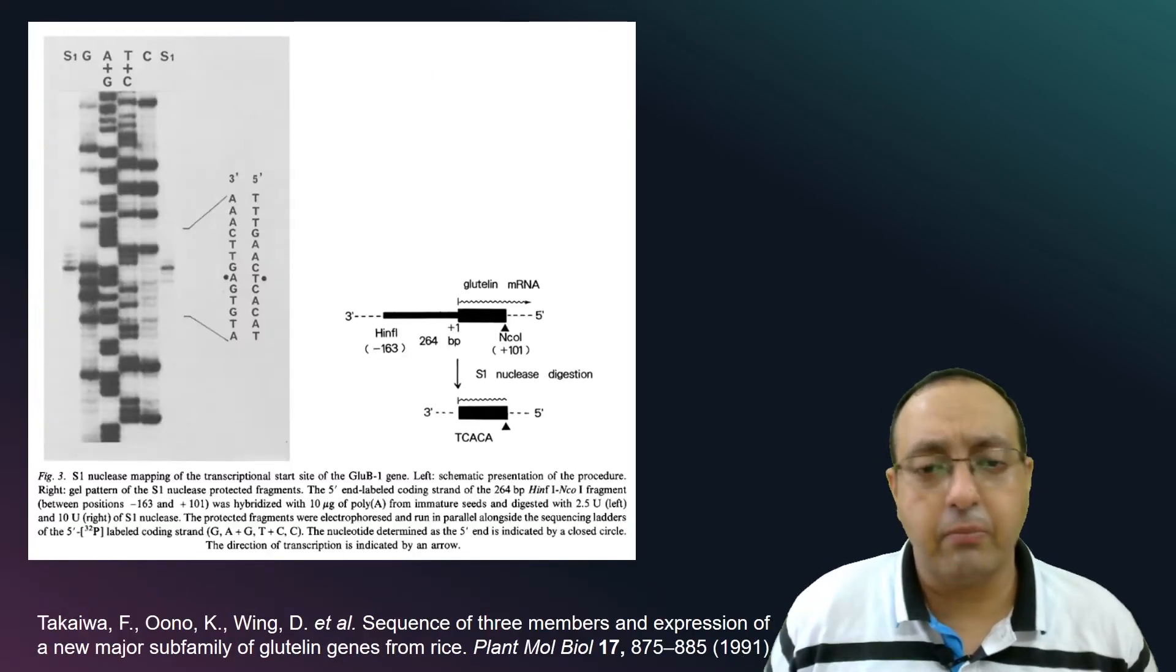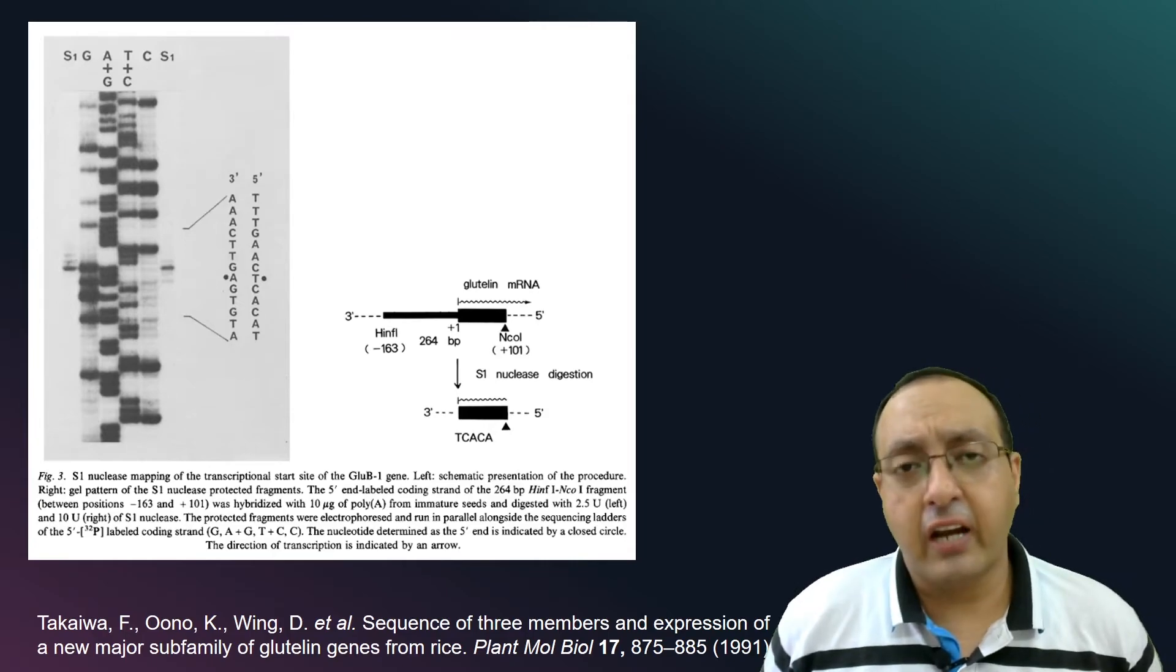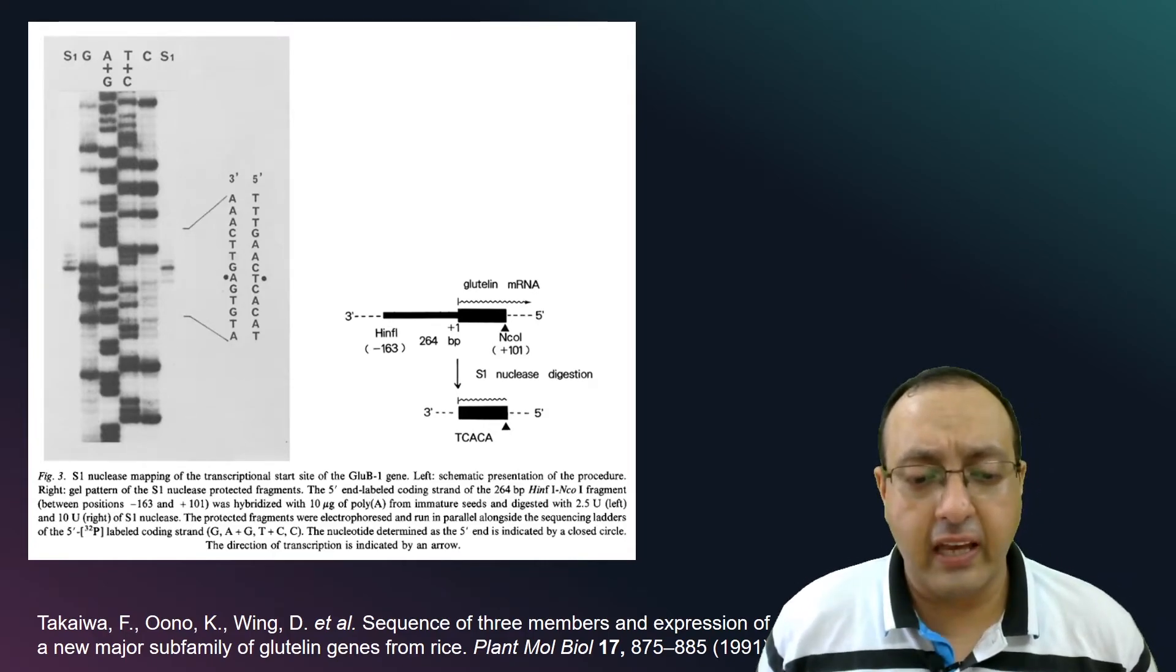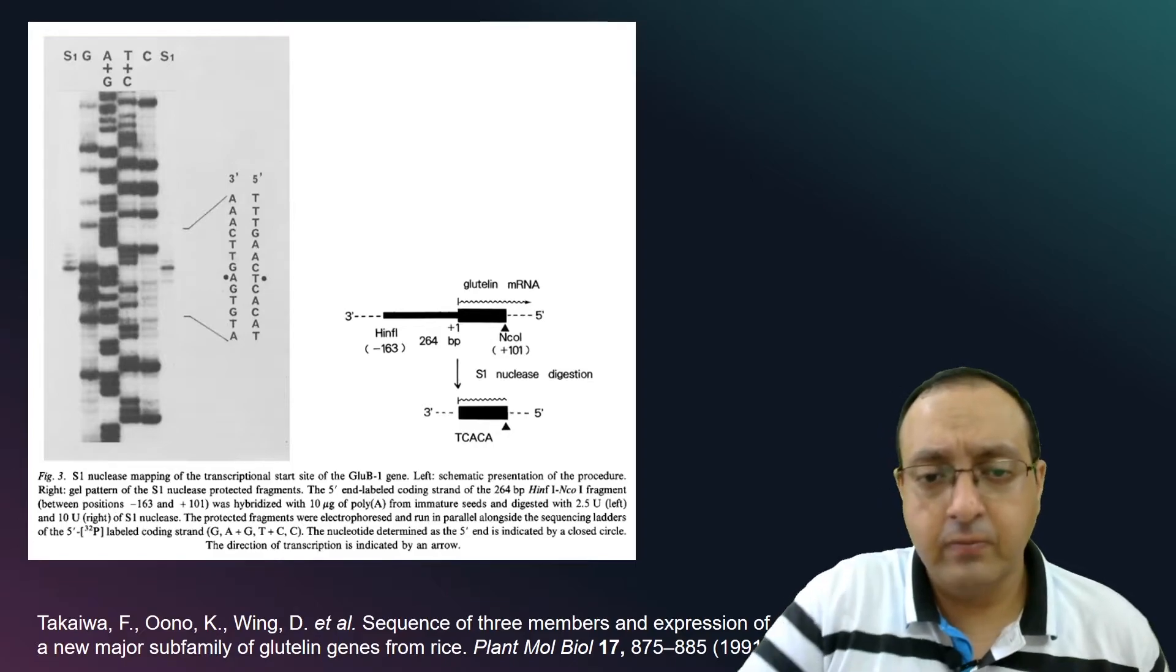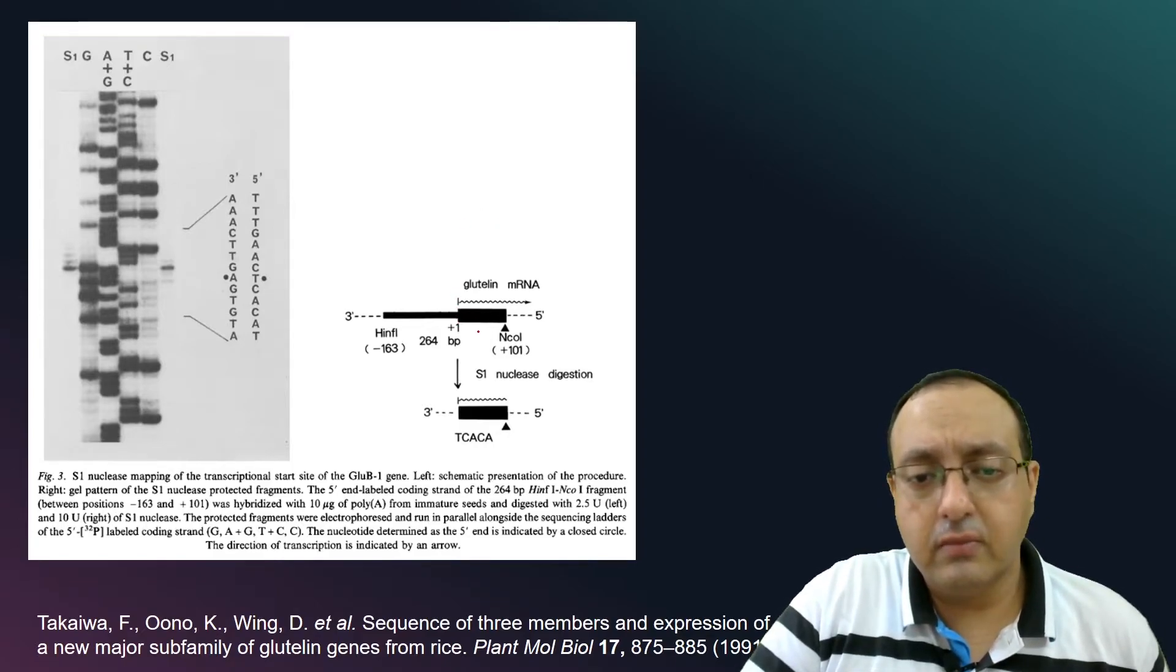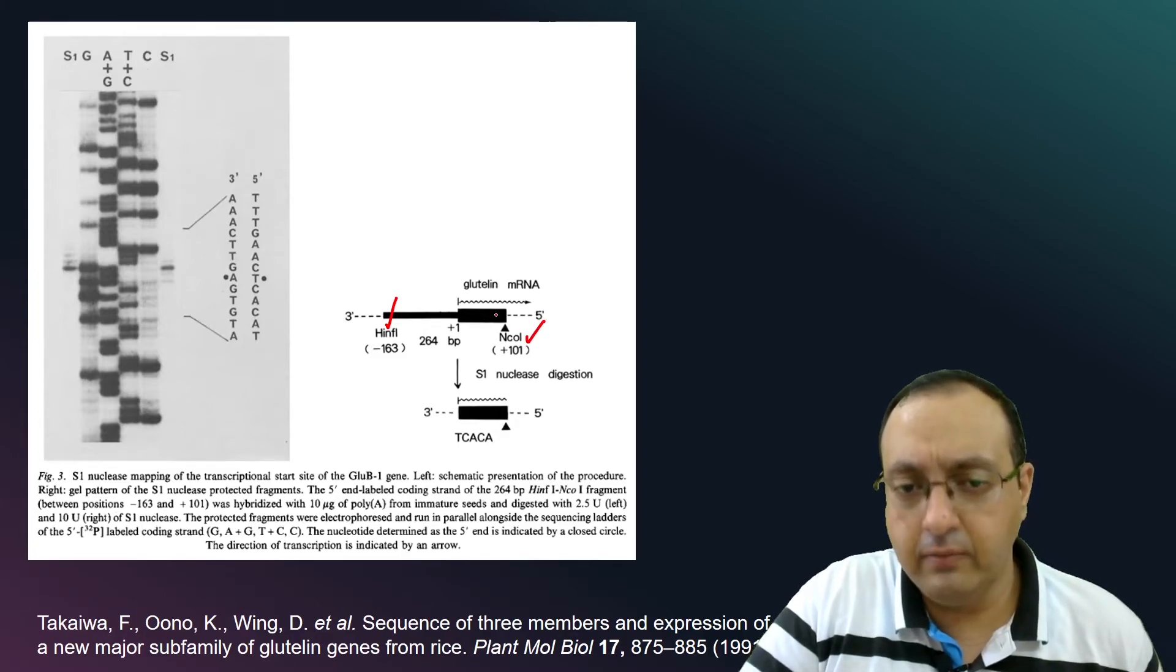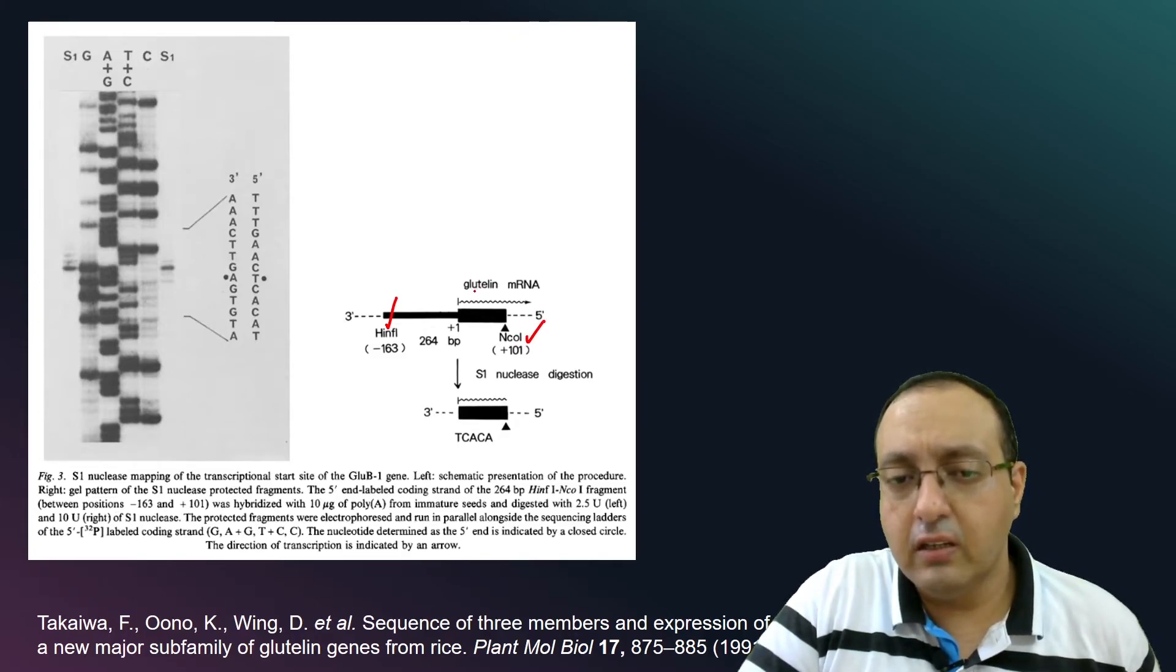So here is a good example from a study published in 1991 where they were looking at glutenin gene from rice. So they took a fragment which is digested with INF1 and NCO1 and hybridized it to the glutelin mRNA.